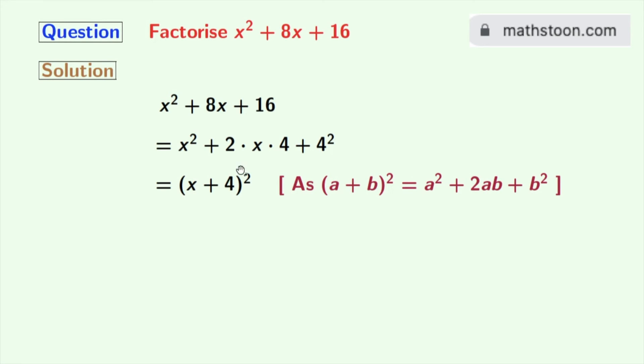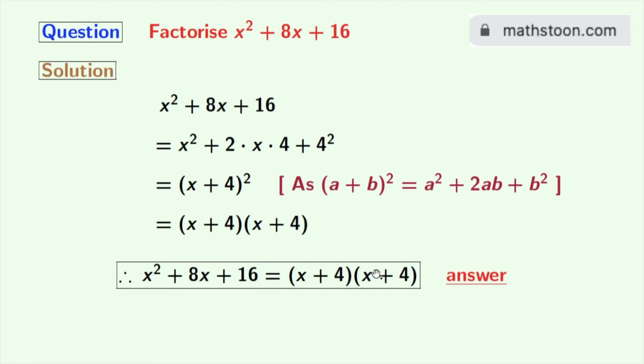Now notice that it has the exponent 2, so it can be written as (x + 4)(x + 4). So finally we get this as the product of (x + 4) and (x + 4). This is our final answer.